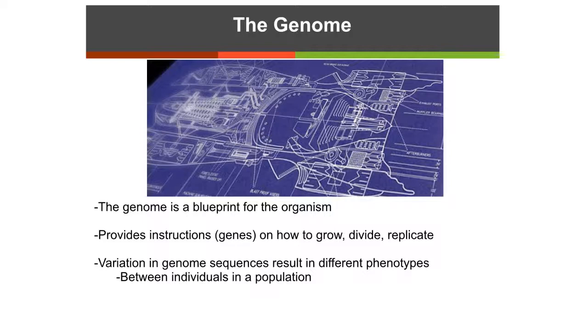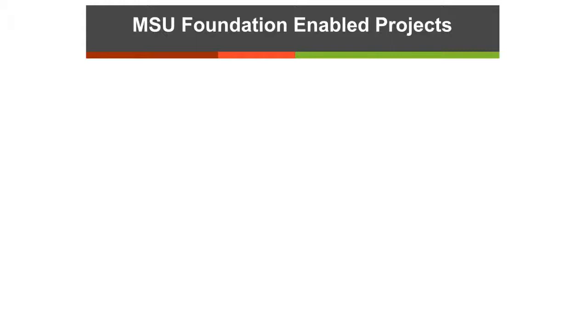You can have differences among the population, and you can have differences among species. What makes a rat a rat and a human a human is differences in the genome. There are also differences between plants, animals, bacteria, and fungi. The projects I'm going to be using these funds for center around three different approaches to ask biological questions.